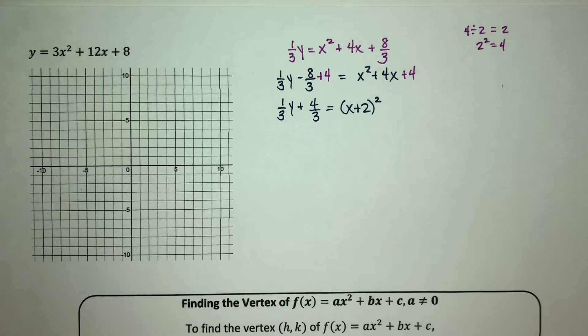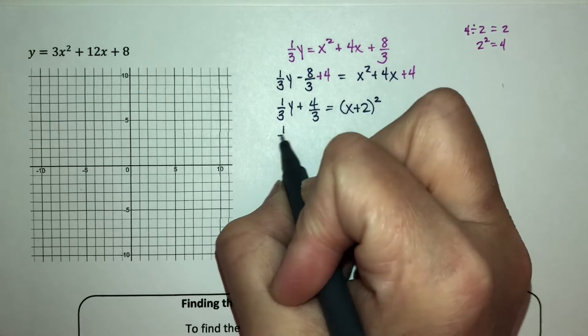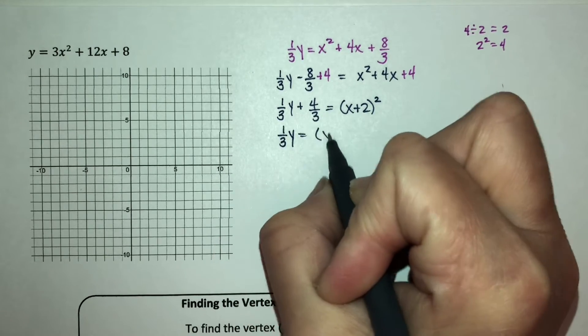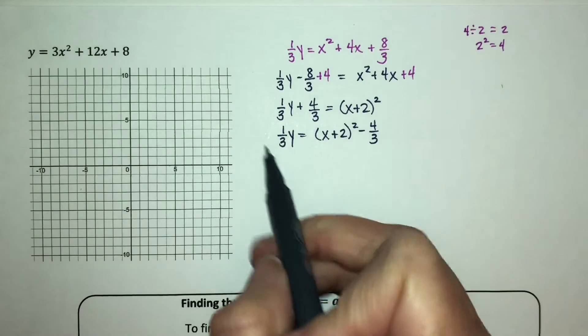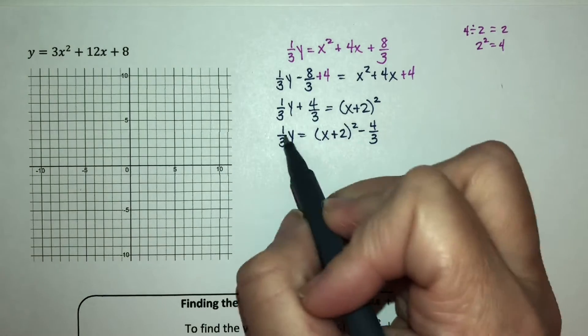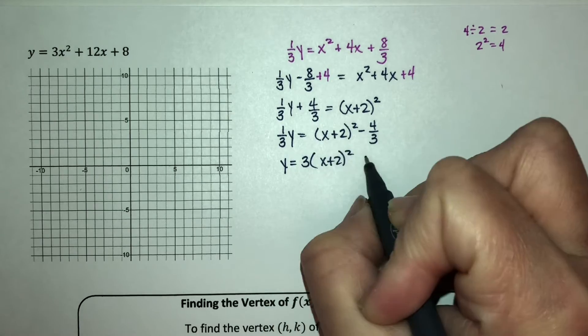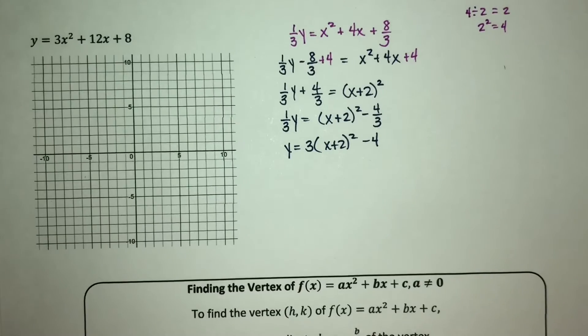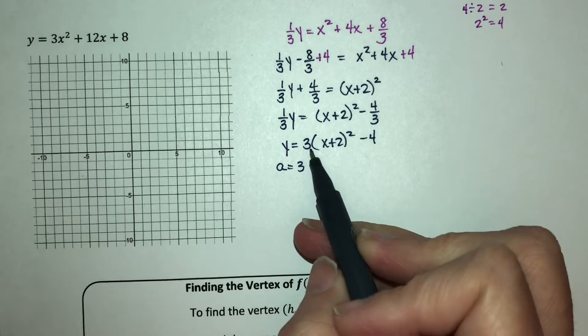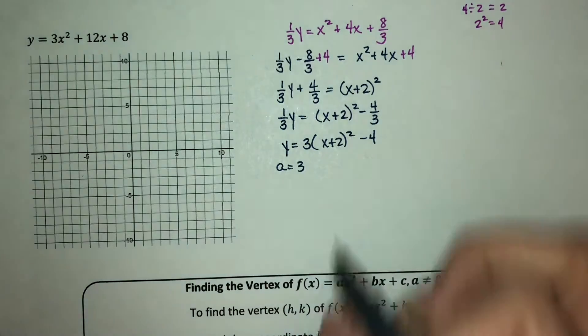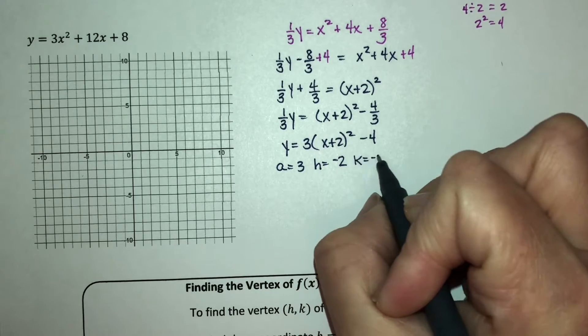Okay. So we've completed the square. Now let's get the y by itself again. So I'm going to subtract 4/3 from both sides and multiply everything by 3 so you just have a y again. So you have y = 3(x + 2)² - 4. Okay, so your a value is 3. That means my graph is going to open up because it's positive. My h value is -2 and the k value is -4.